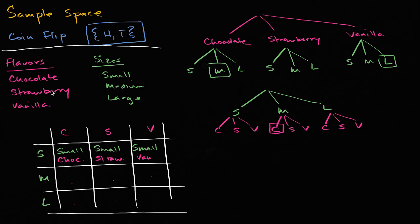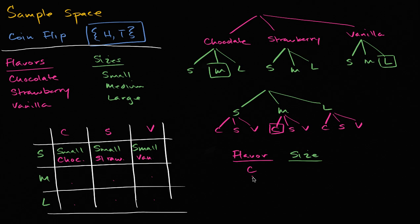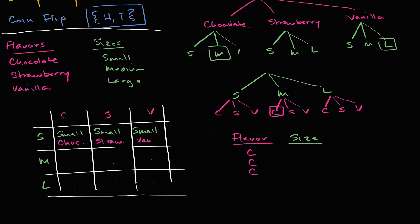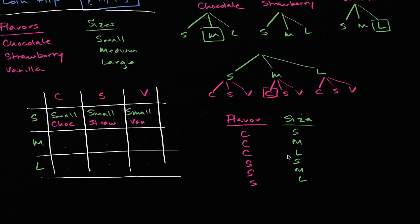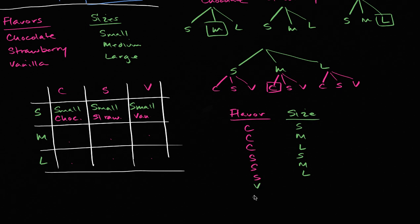A third way is to construct a table with a flavor column and a size column. You could list: three types of chocolate — small, medium, or large; three types of strawberry — small, medium, or large; and three types of vanilla — small, medium, or large. So you have these nine possibilities.